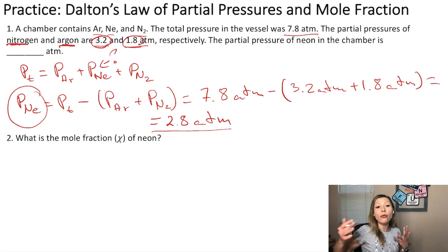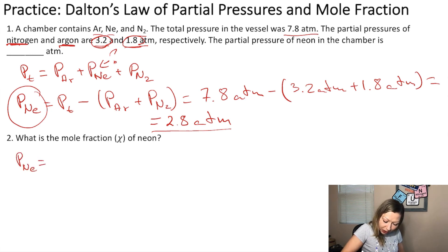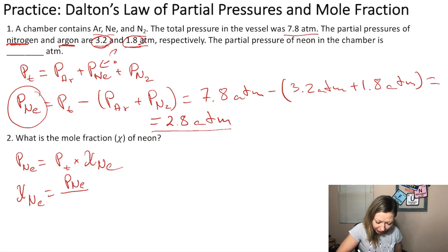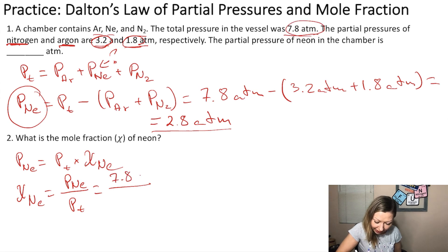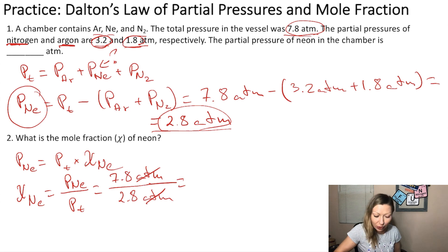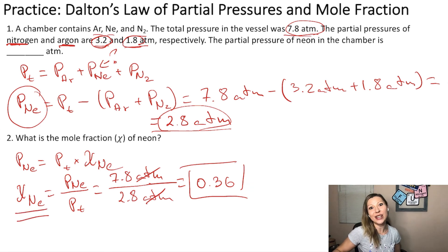Now, what is the mole fraction of neon? The partial pressure of neon equals the total pressure multiplied by the mole fraction of neon. Rearranging, the mole fraction of neon equals the partial pressure of neon divided by the total pressure: 2.8 atm divided by 7.8 atm. The atm units cancel — the mole fraction is unitless — giving 0.36 as the mole fraction of neon.